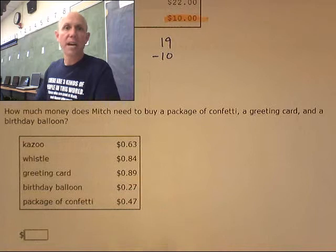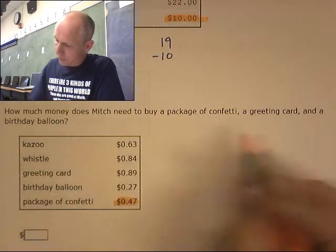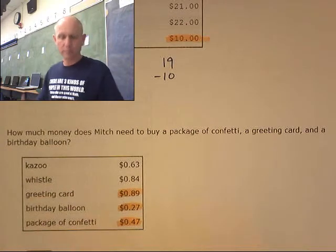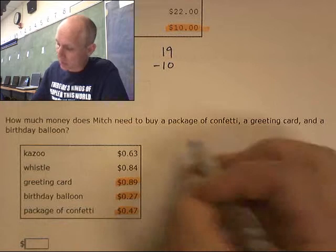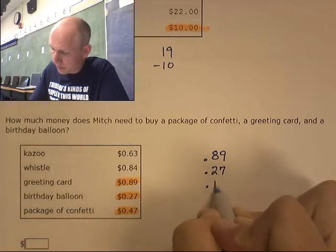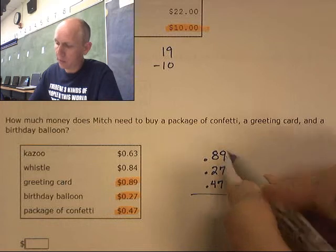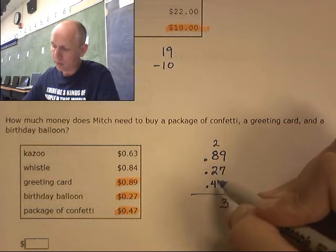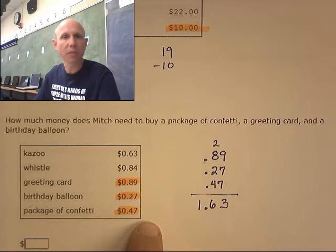How much money does Mitch need to buy a package of confetti, a greeting card, and a birthday balloon? He wants to buy those three things together — that's an addition problem. Adding them: 89 cents plus 27 cents plus 47 cents. That comes out to a dollar sixty-three. That seems very reasonable.